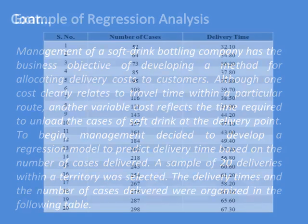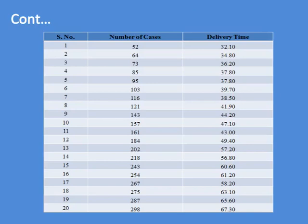Here is the data of 20 customers regarding the independent variable, which is number of cases X, and the dependent variable, which is delivery time Y. We can find the summary and significance parts of the model using a scientific calculator.